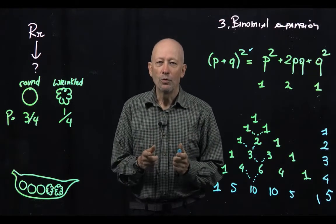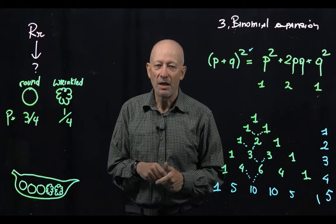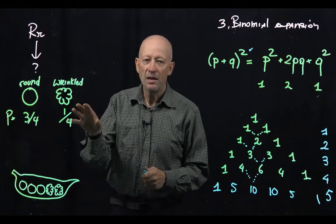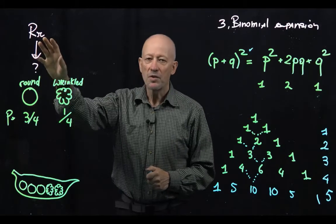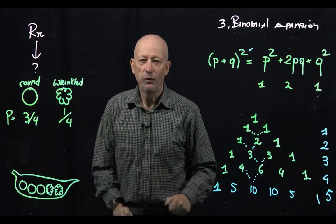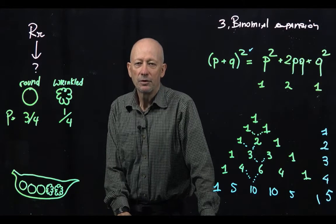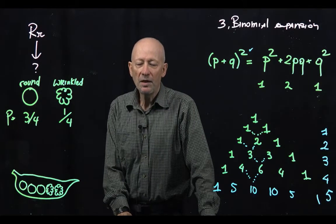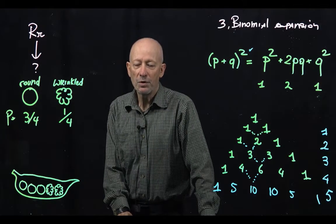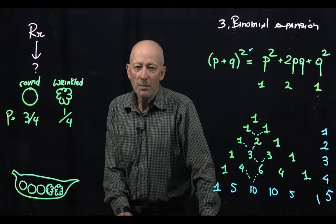Where do we apply the binomial expansion? The case is shown here. Let's consider a heterozygous individual for the round seed trait. You know that this individual can produce in a self two types of progeny.